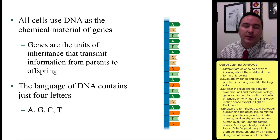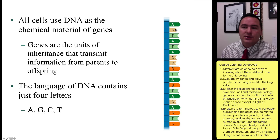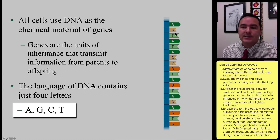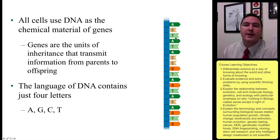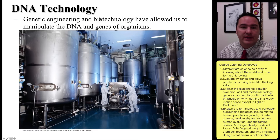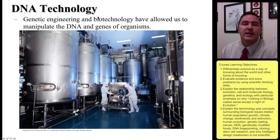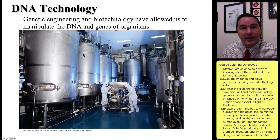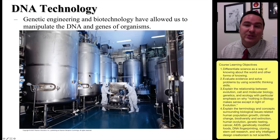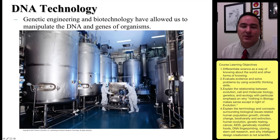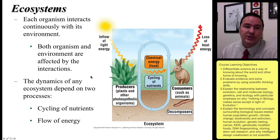DNA tells an organism how to build an arm, how to build an eye, and how to build a particular protein. DNA is made up of only four different nucleotides — essentially four letters: A, C, T, and G — and it's those four letters that create the diversity of life on this planet. We've taken advantage of our knowledge of DNA through DNA technology, where we can take DNA from a bacterium and from a human, mix them together, and have a bacterial organism produce the products from a human gene.